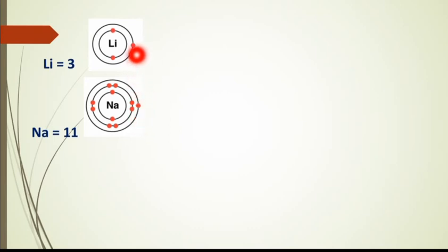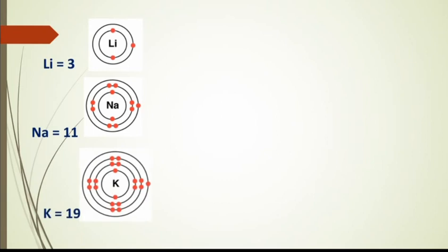अब देखें difference है कि size का। Top to bottom जब हम move कर रहे हैं, तो atomic number increase हो रहे हैं, लेकिन atomic number increase होने की वज़े से electrons भी increase हो रहे हैं, और वो electron जो increase हो रहे हैं वो extra shell में जा रहे हैं - number of shells भी बढ़ रहे हैं। Next element है potassium, इसका atomic number 19 है - first shell में 2, second में 8, third में 8, और 19th electron last shell में आएगा। तो top to bottom जब move करते हैं, electrons increase होने की वज़े से number of shells बढ़ रहे हैं, और number of shells बढ़ने की वज़े से इनका size भी बढ़ रहा है।